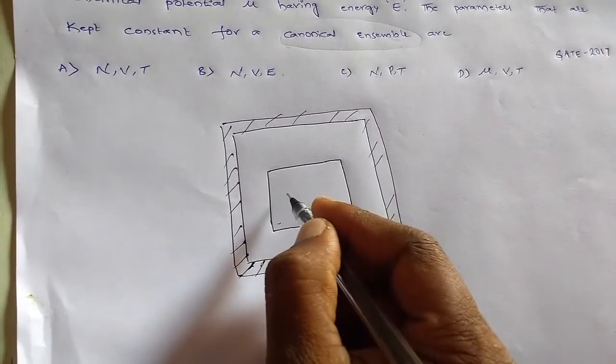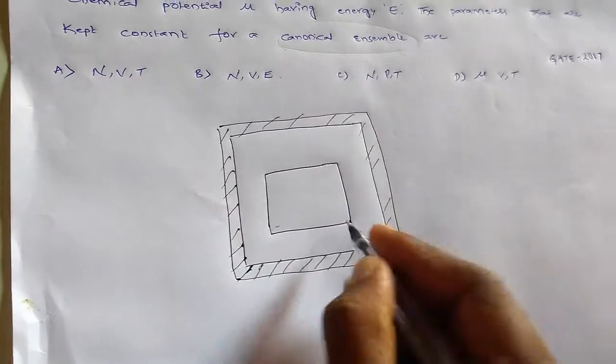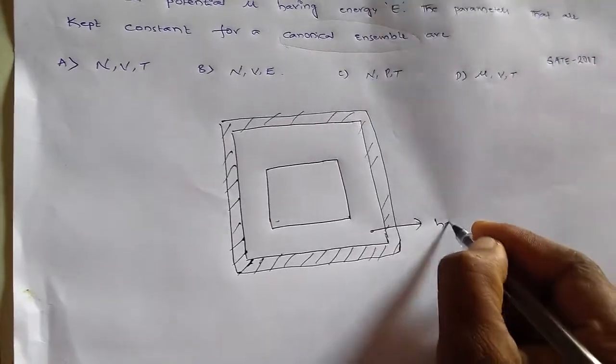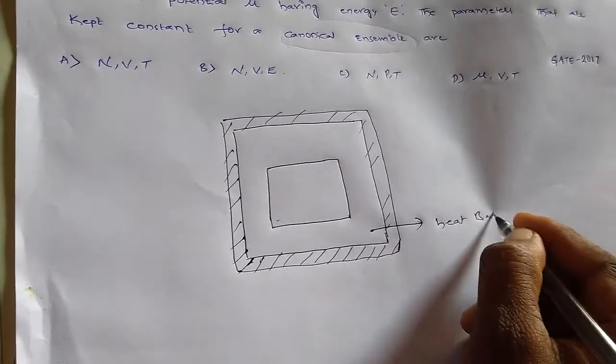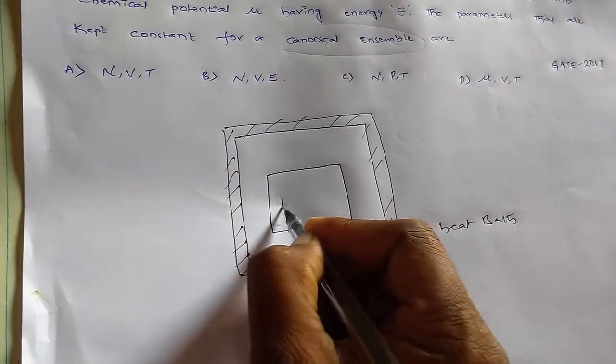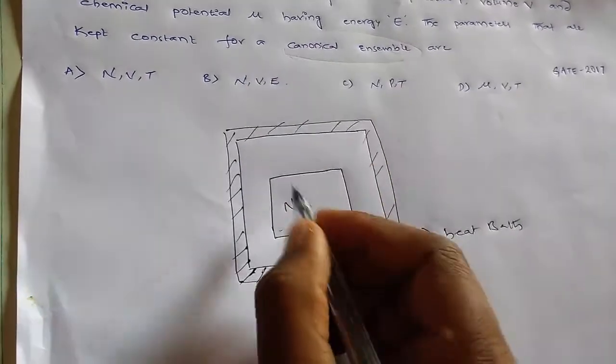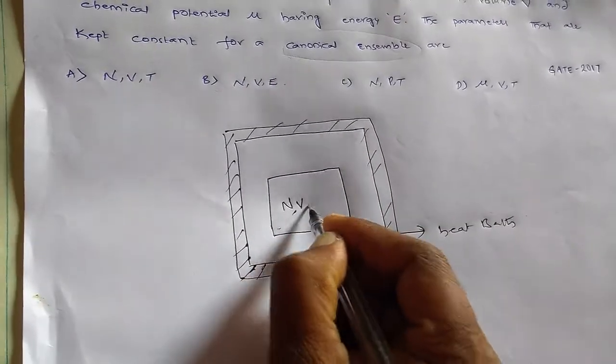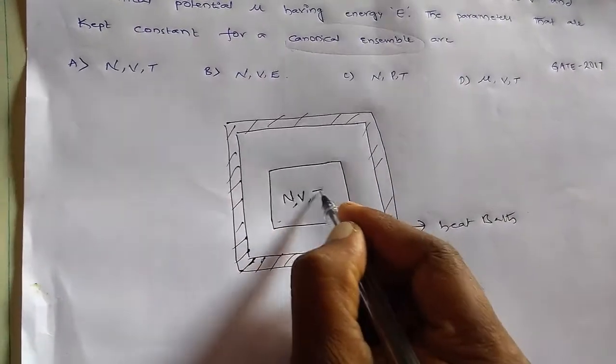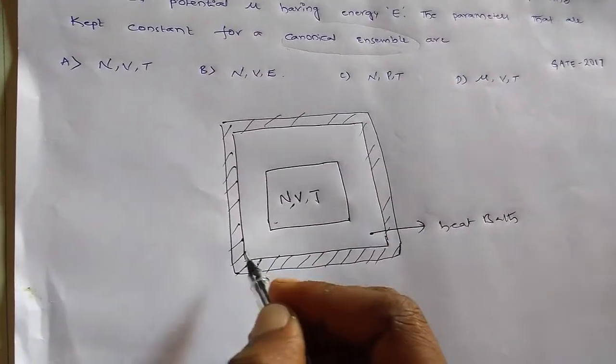Consider this is a system A and this is heat bath. So the system has n number of particles, volume V, and temperature T or constant temperature.